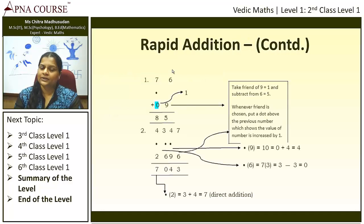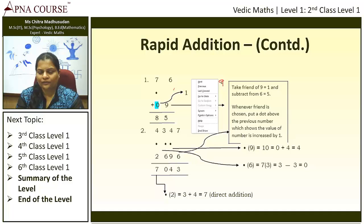Whenever the direct addition is not possible, we are going to take the help of friend. For example, you can see here the number given is 76. So in this example, 76 plus 9, so 6 plus 9, where 6 plus 9 is not a direct addition. So here we are taking a friend of 9, that is 10th compliment. Friend of 9 is 1 here.